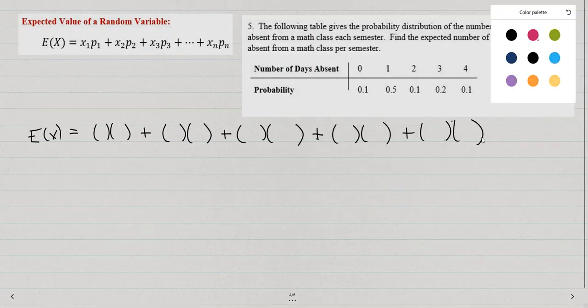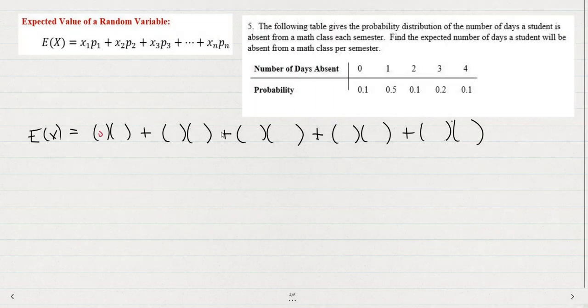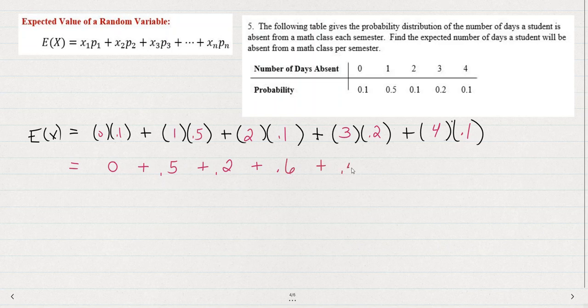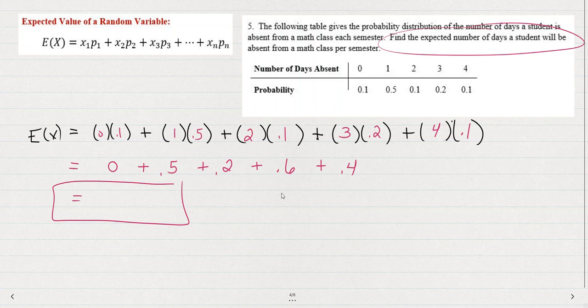So we could sum up those products and fill in the 0, 1, 2, 3, 4, and the probabilities, 1 tenth, 2 tenths, 1 tenths, 5 tenths, 1 tenths, multiply them out. This first one we wouldn't really even need to put in our calculator. And then add them up to get the expected value.